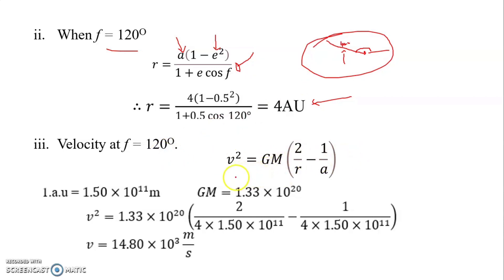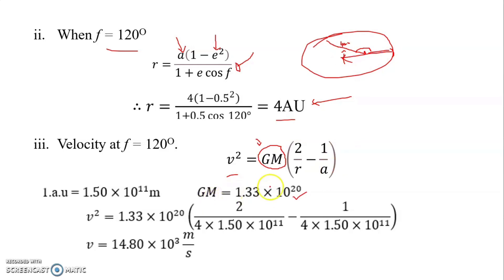To find the velocity at f = 120°, we use the vis-viva equation. The GM value for the Sun is 1.33 × 10²⁰. We know r = 4 AU and the semi-major axis a = 4 AU. We substitute r and a into the vis-viva equation.